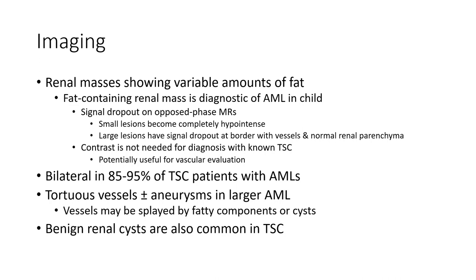Contrast is not needed for diagnosis with known TSC, but is potentially useful for vascular evaluation. Bilateral involvement is seen in 85 to 95% of TSC patients with angiomyolipoma. Dilated tortuous vessels, with or without aneurysm, are seen in larger angiomyolipomas. Vessels may be displaced by the fatty component. Benign renal cysts are also common in TSC.